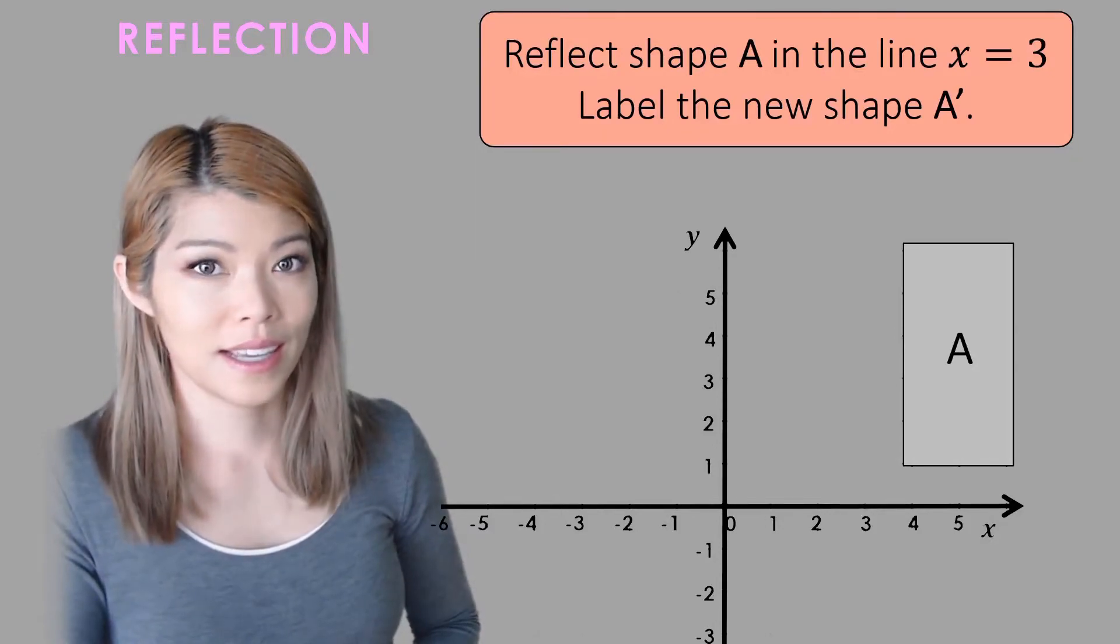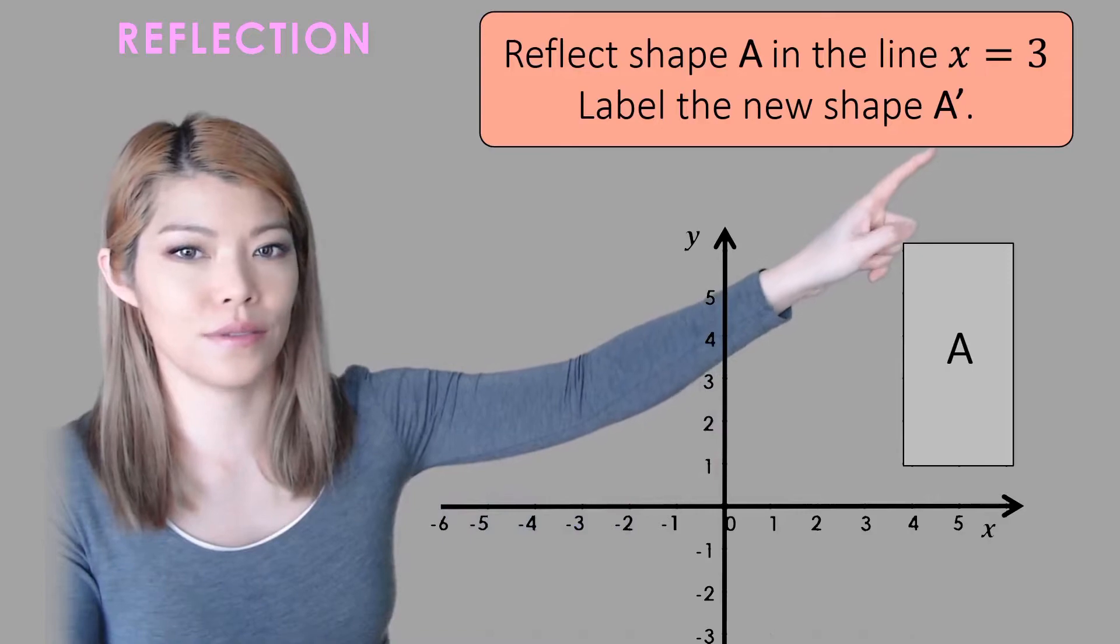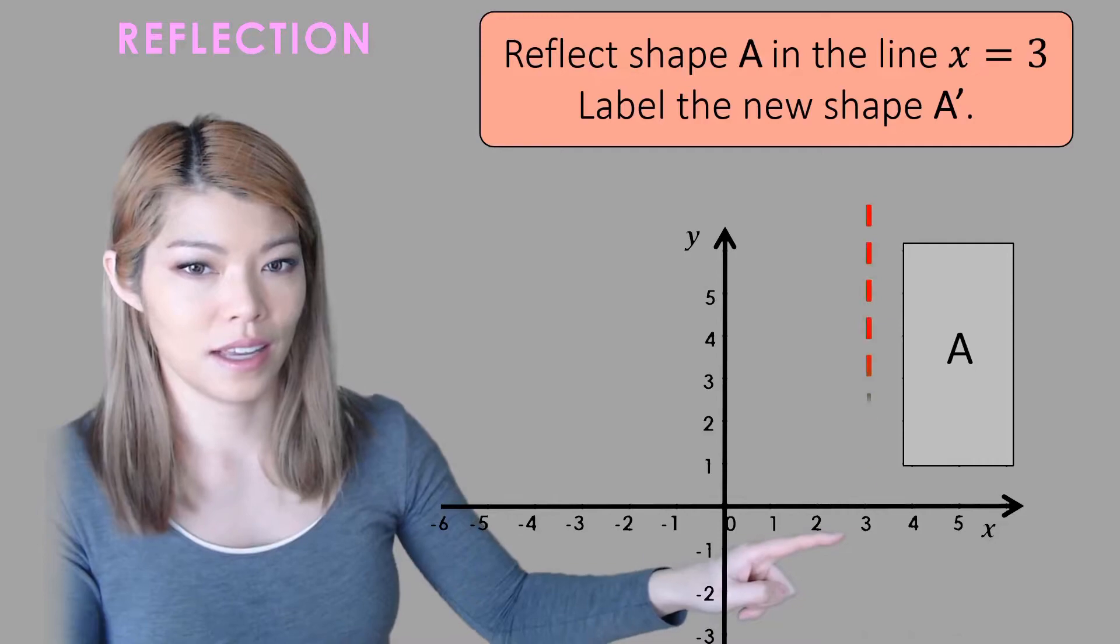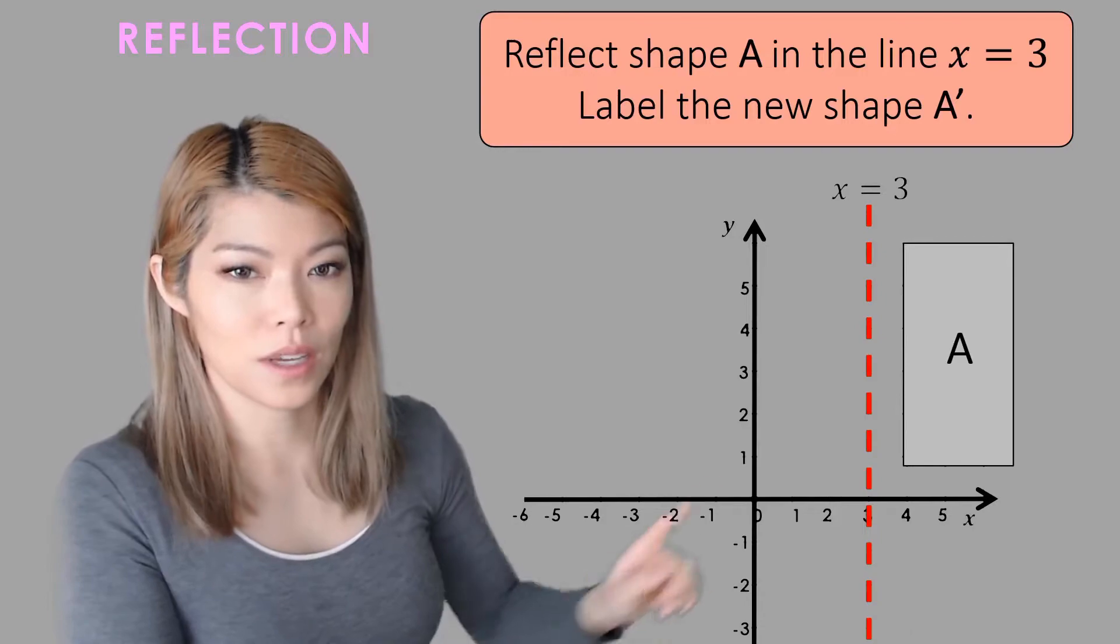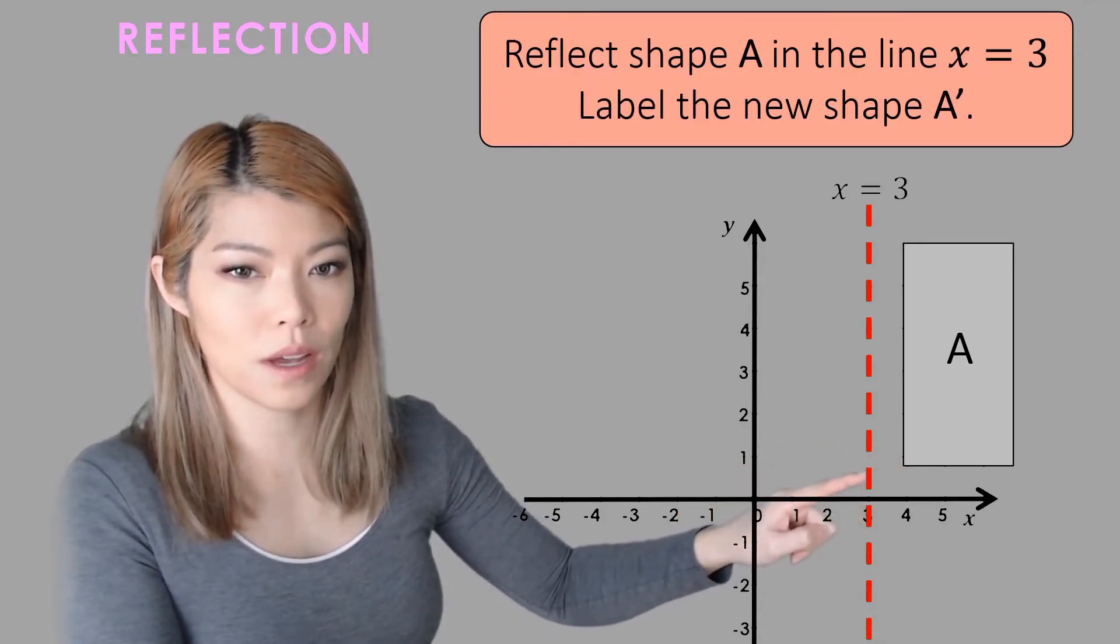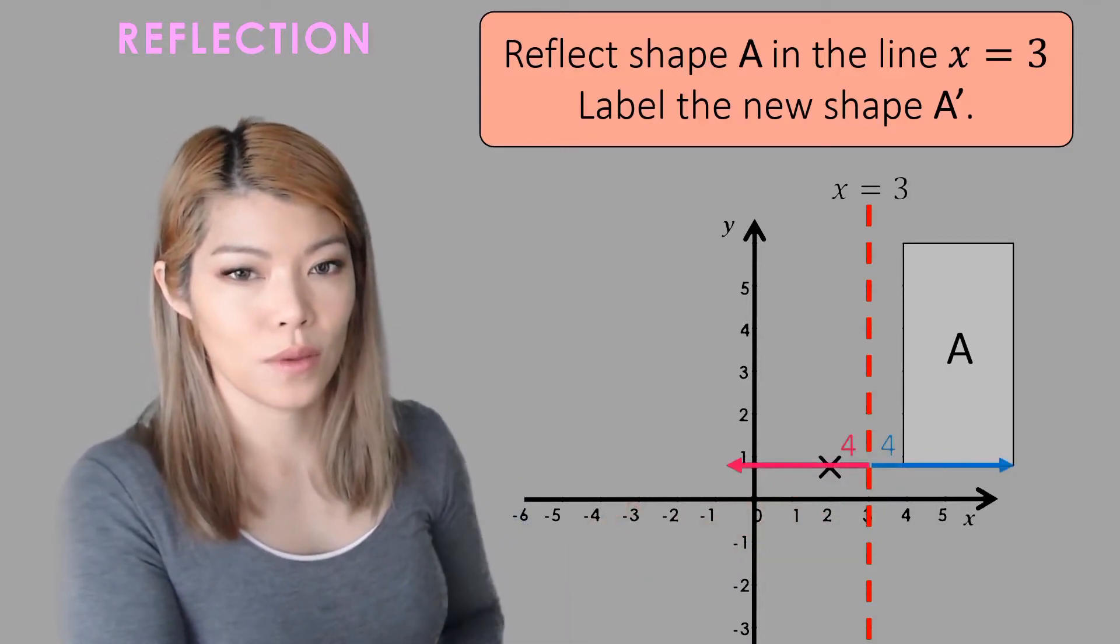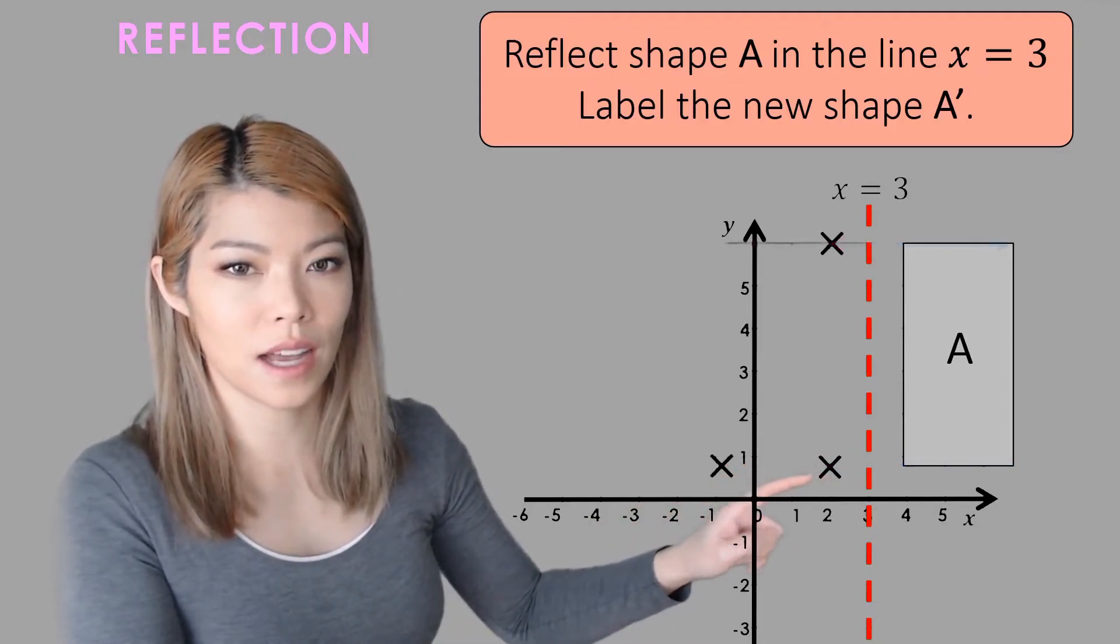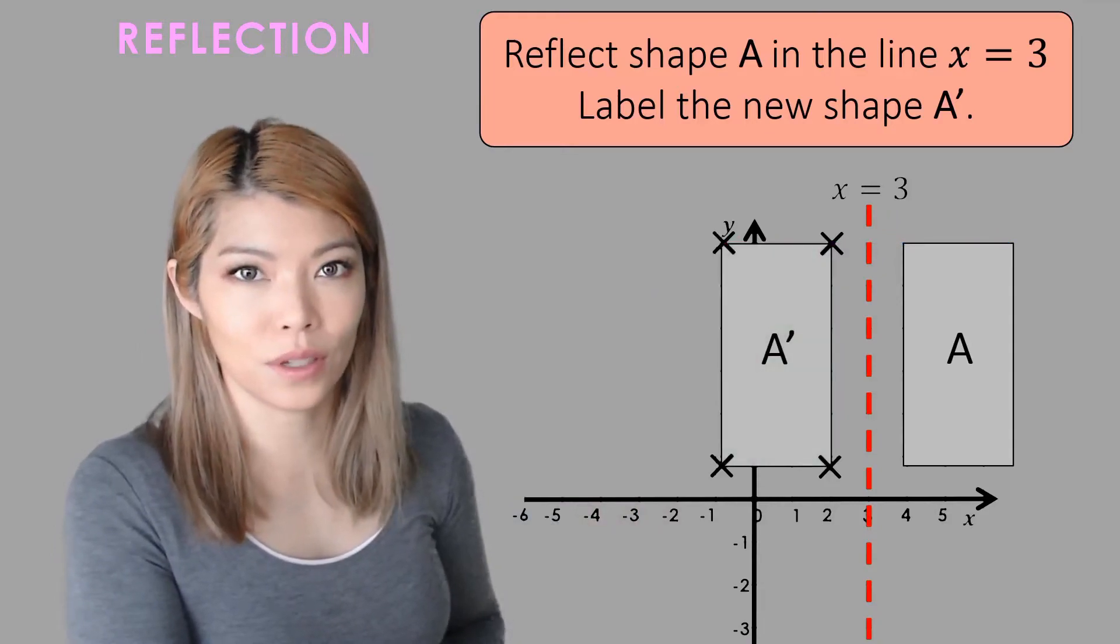Let's do another one. This time it says reflect shape A in the line x equals three. So the mirror is at x equals three. So here's three, x equals three is this line here and that's going to be our mirror this time. So again we measure to the mirror and away from it and once we get all four corners we can draw our shape. So again always measuring to this line, get the four corners, draw the shape and that's our new image.